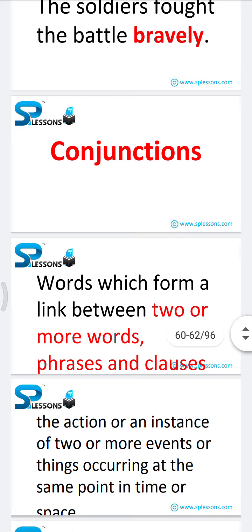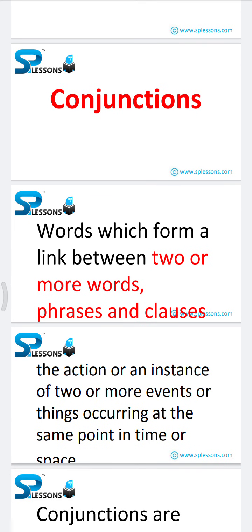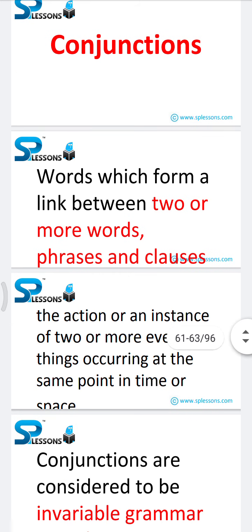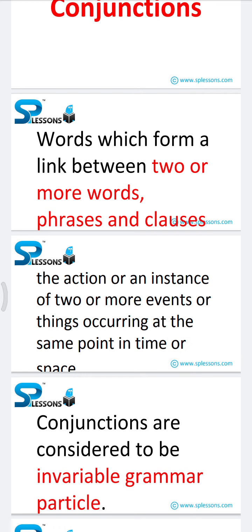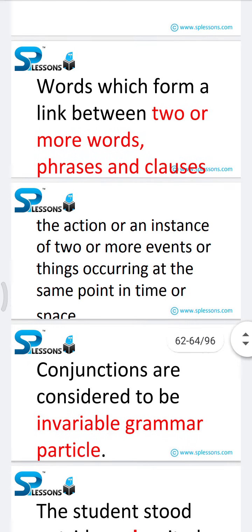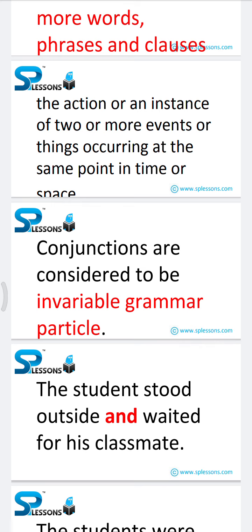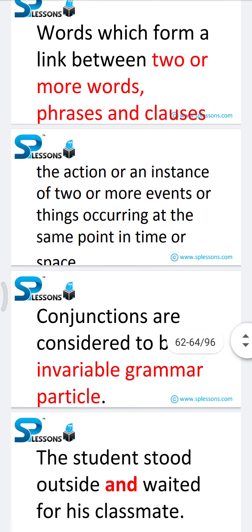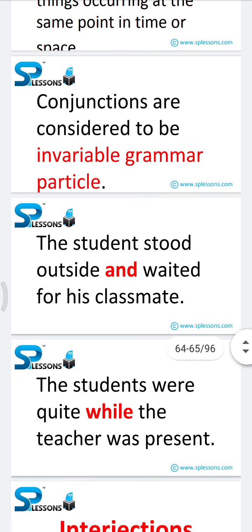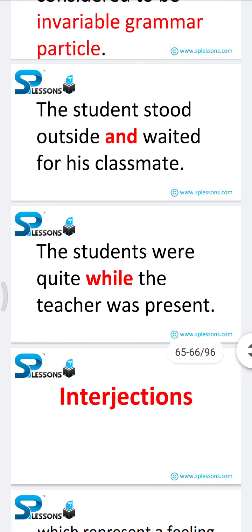Next is conjunctions. Words which form a link between two or more words, phrases, and clauses are called conjunctions. Conjunctions are considered invariable grammar particles. 'The student waited outside and they waited for his classmate' — here 'and' is a conjunction. 'The students were quiet while the teacher was present' — here 'while' is a conjunction.